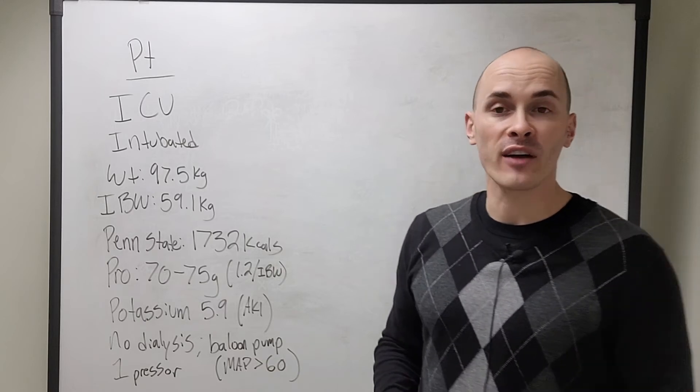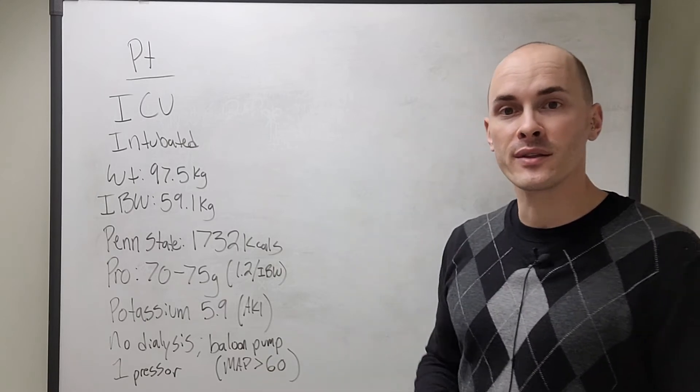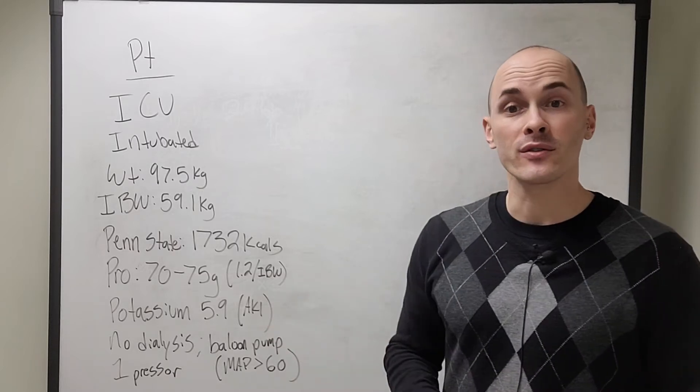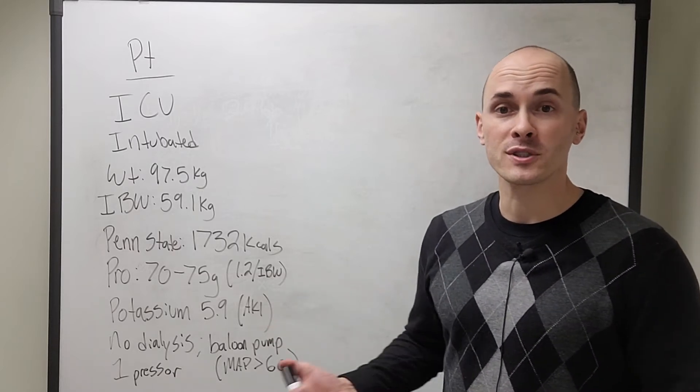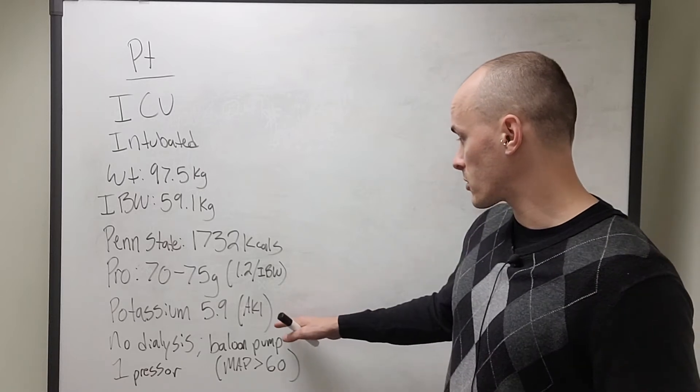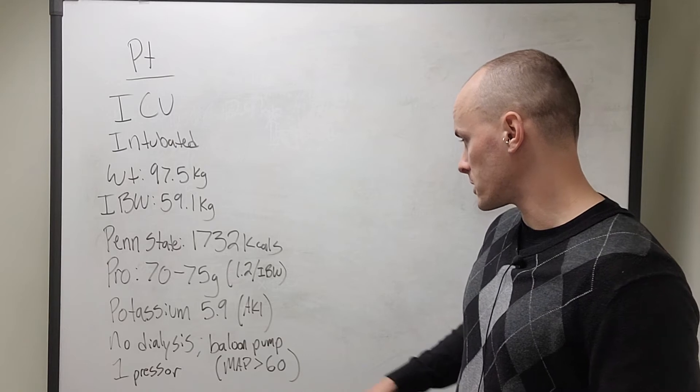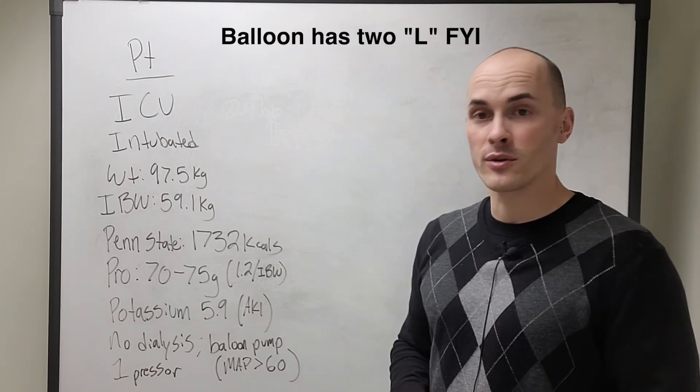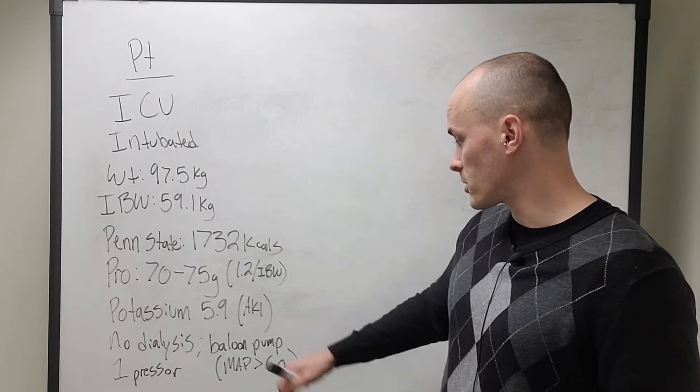Their potassium currently is 5.9, which is elevated. Anything above 5 is considered high. However, this is in the setting of acute kidney injury. This person does have chronic kidney disease stage three, but they're not in renal failure currently. No dialysis is currently indicated.